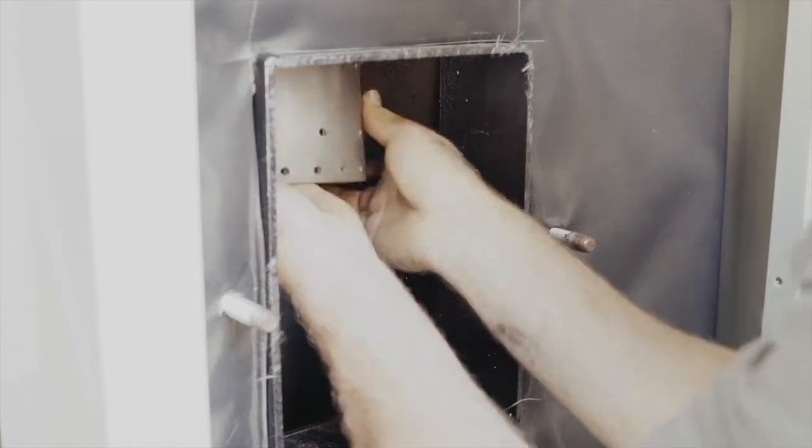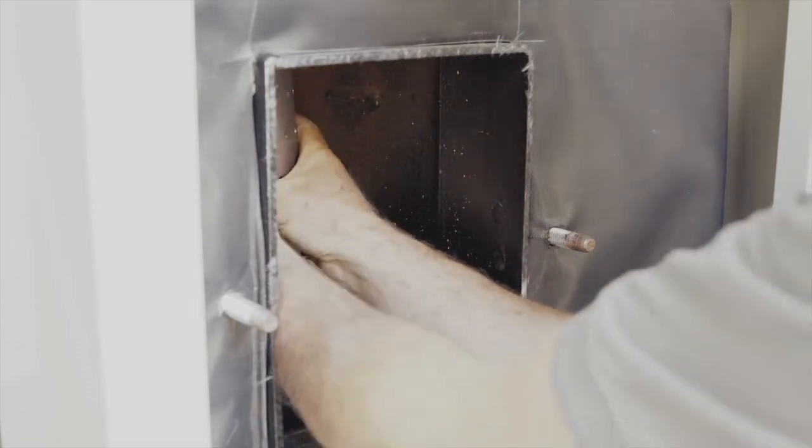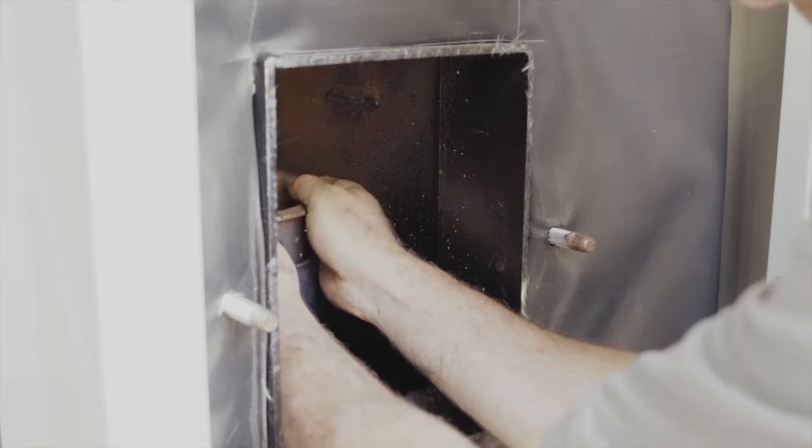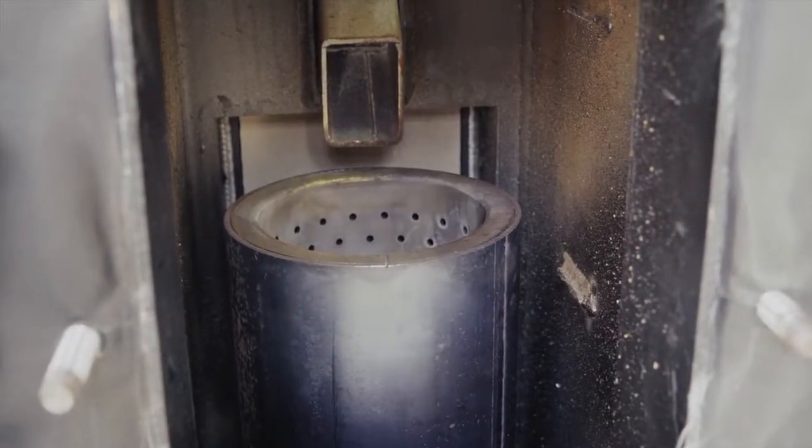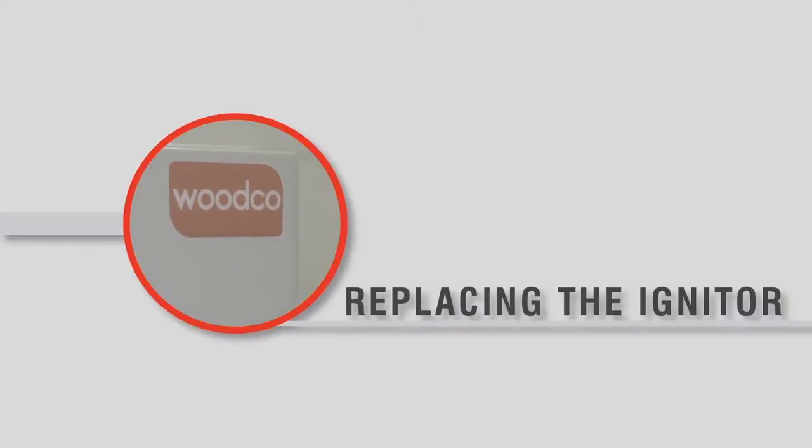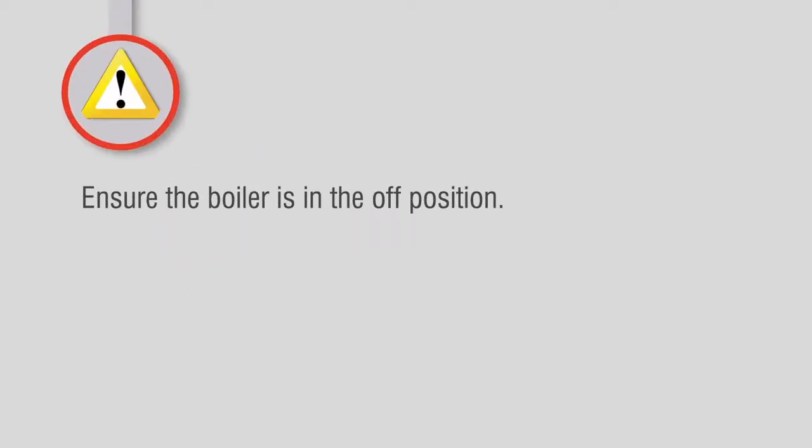Check that the rope seal maintains a tight seal when replaced in the holder. Ensure you replace the plate on the burner pot and close it fully. Ensure the boiler is not running and is in the off position.